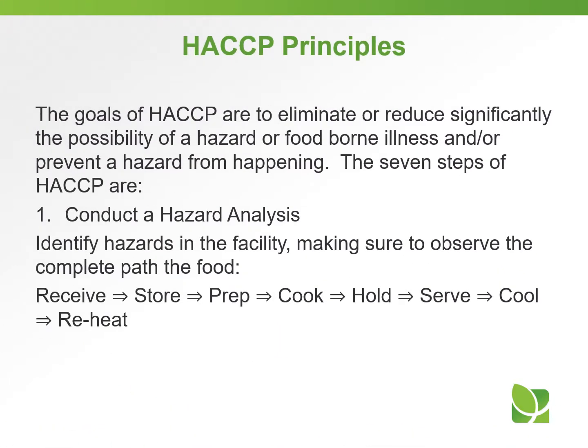The goals of HACCP are to eliminate or significantly reduce the possibility of a hazard or foodborne illness, and/or prevention of a hazard from happening. The 7 steps of HACCP: Step 1 — Conduct a hazard analysis. Identify hazards in the facility, making sure to observe the complete path the food travels from receiving, storing, prepping, cooking, holding, serving, cooling, and reheating.